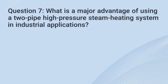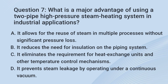Question 7. What is a major advantage of using a two-pipe high-pressure steam heating system in industrial applications? A. It allows for the reuse of steam in multiple processes without significant pressure loss. B. It reduces the need for insulation on the piping system. C. It eliminates the requirement for heat exchange units and other temperature control mechanisms. D. It prevents steam leakage by operating under a continuous vacuum.